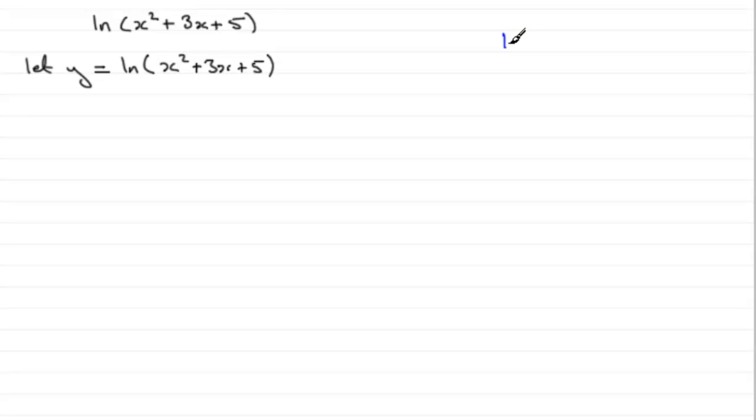So what I'm going to do is let t equal x squared plus 3x plus 5. And that means that y would equal the natural log of t.